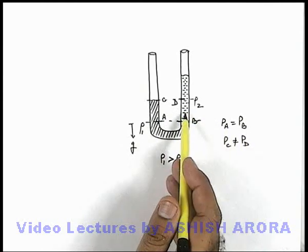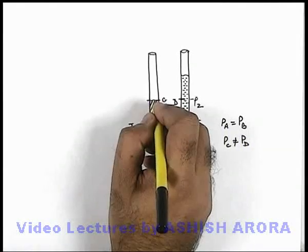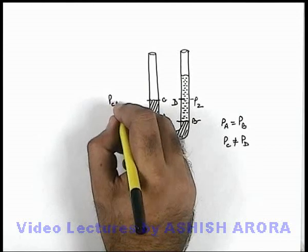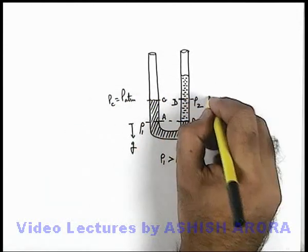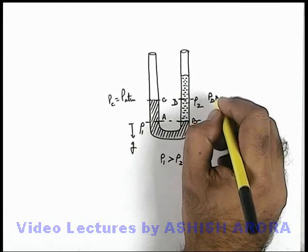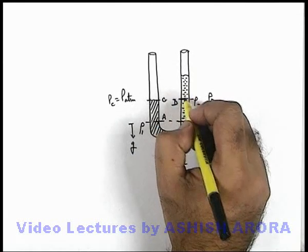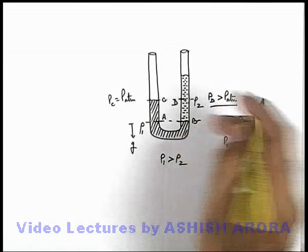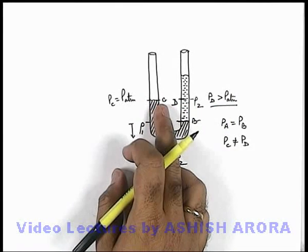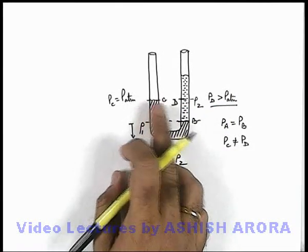And this can be directly seen that as point c is at the top of this liquid, pressure at c can be taken as P_atmospheric, whereas if we talk about pressure at point d, it'll be P_atmospheric plus some value, so it'll be more than P_atmospheric. So we can directly state there is no direct correlation between pressure at c and pressure at d.